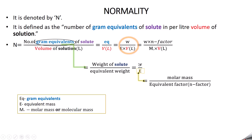Gram equivalents can be found by dividing the weight of the solute by the equivalent weight of the solute. Equivalent weight is obtained by dividing molar mass by the N factor (or equivalent factor). So when you divide weight by equivalent weight, you get gram equivalents. Therefore normality equals weight divided by equivalent weight, divided by volume in liters.